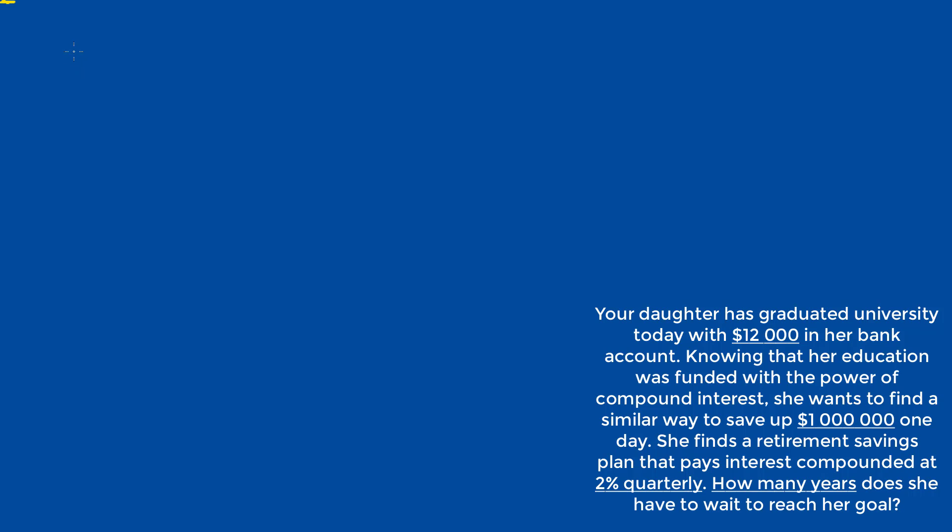When we calculate the end value with the given rate and future value and present value, we're actually going to get the number of quarters because the rate is a quarterly compounding rate, and that's not going to give us the number of years. But fortunately, this is an easy fix. When we get the end value, all we have to do is divide by 4, so we get the number of years.